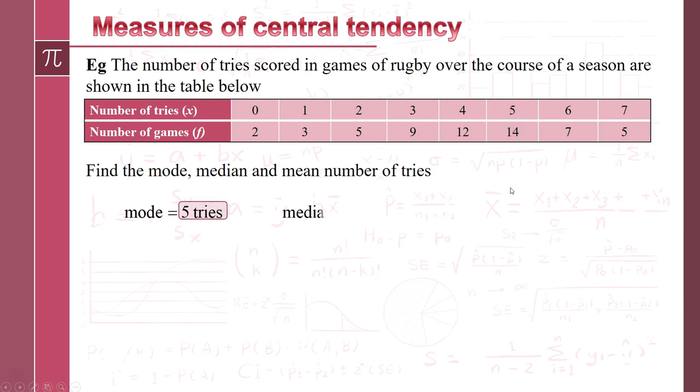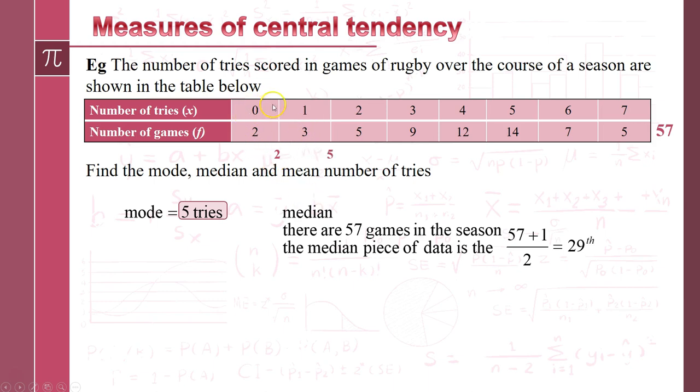Now the median. What we're going to do is try and figure out where the median is. So we need to know, well how many pieces of data have we got? Well, there's a total of 57 games in the season, so that means the median piece of data is going to be the 29th piece of data. And this little formula here, effectively n plus 1 over 2, allows you to find the middle or halfway. So if we have a look up here, we've got two games where no tries were scored and I've got another three games where one try was scored. So if I start imagine writing all these out, so I'll go zero, zero, one, one, one. I've written down five values. If I write down now all the twos, I've got five values, so that'll take me up to ten. All the threes, that's now nine, so now imagine I've written down 19 pieces of data.